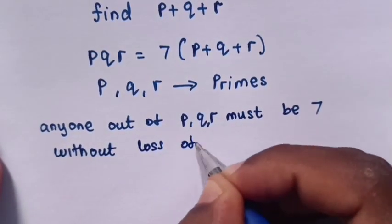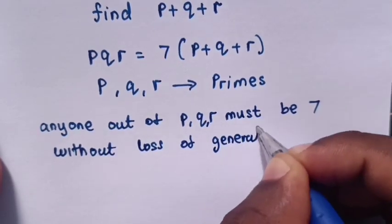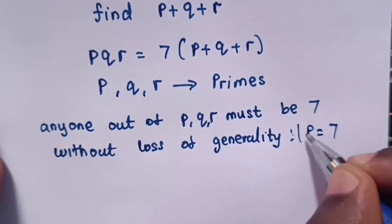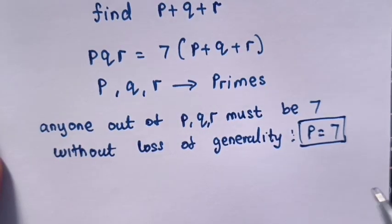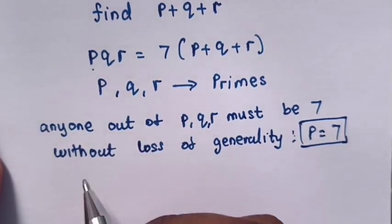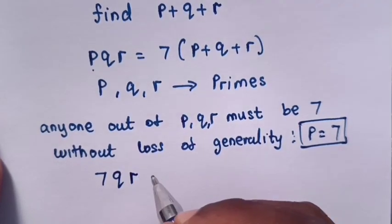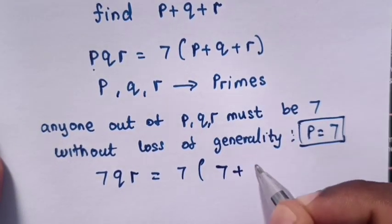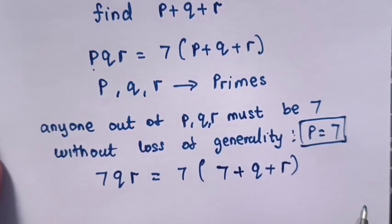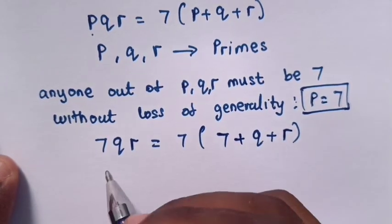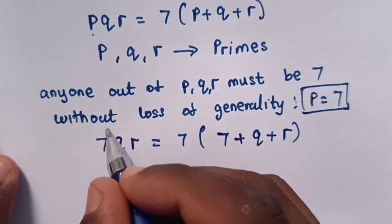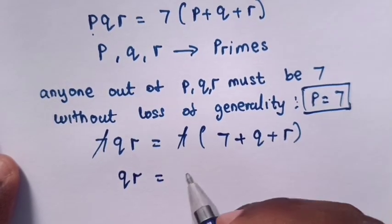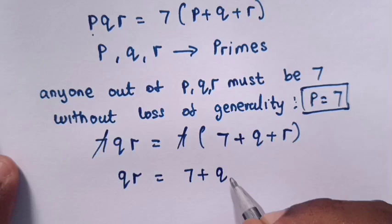Without loss of generality, we choose P to be 7. So now we are going to find the value of Q and R. From P is 7, QR equals 7 times bracket 7 plus Q plus R bracket. Then 7 will cancel each other when we divide by 7 both sides. So QR equals 7 plus Q plus R.